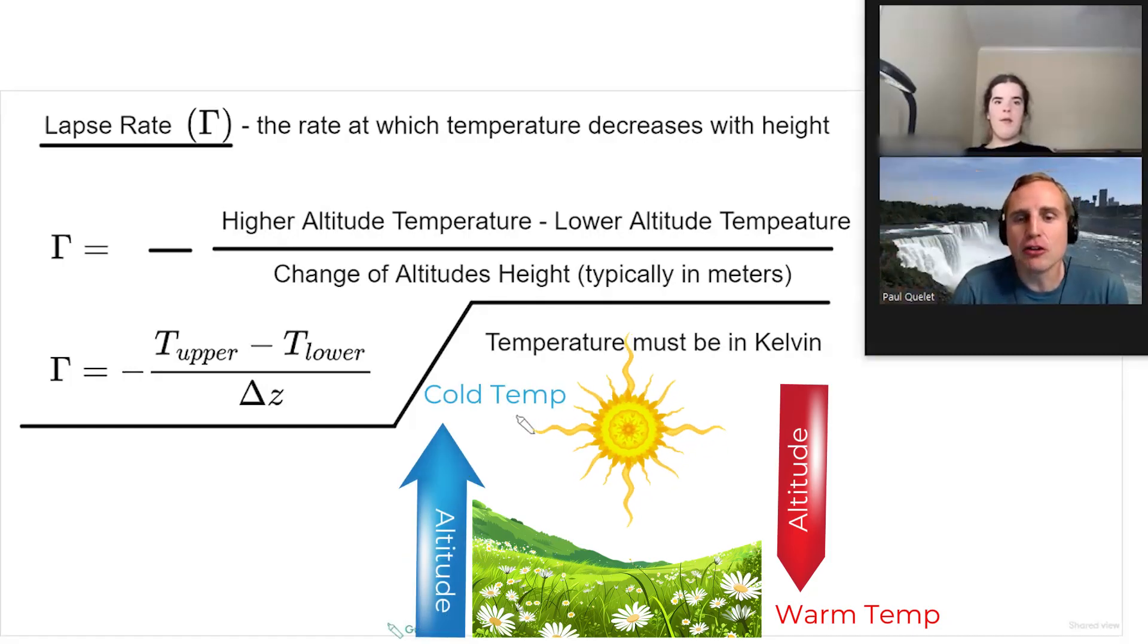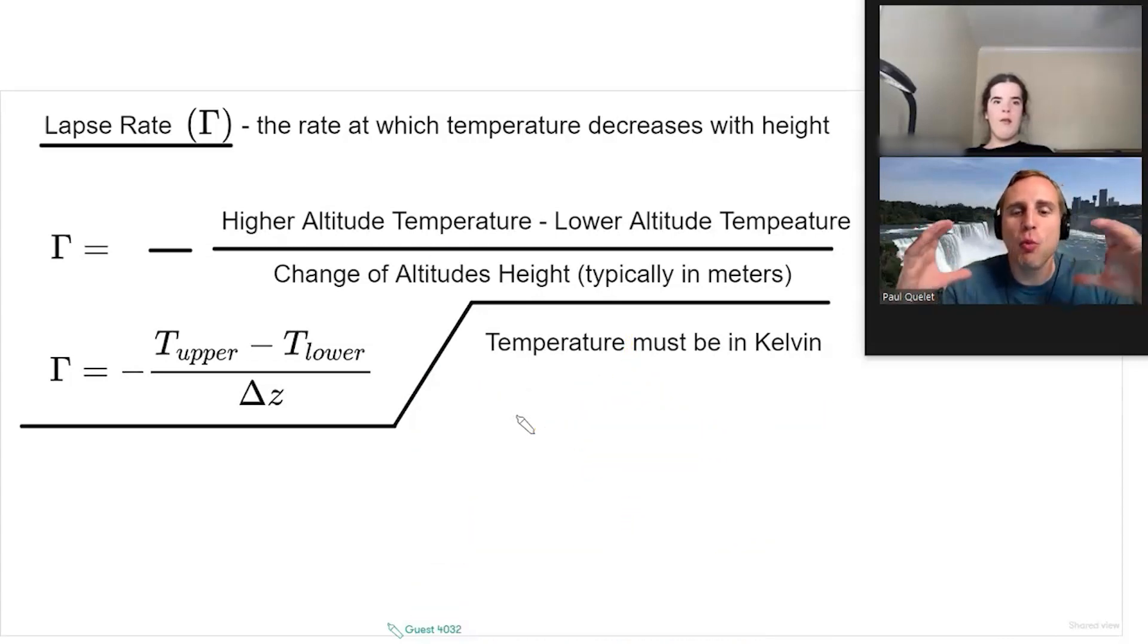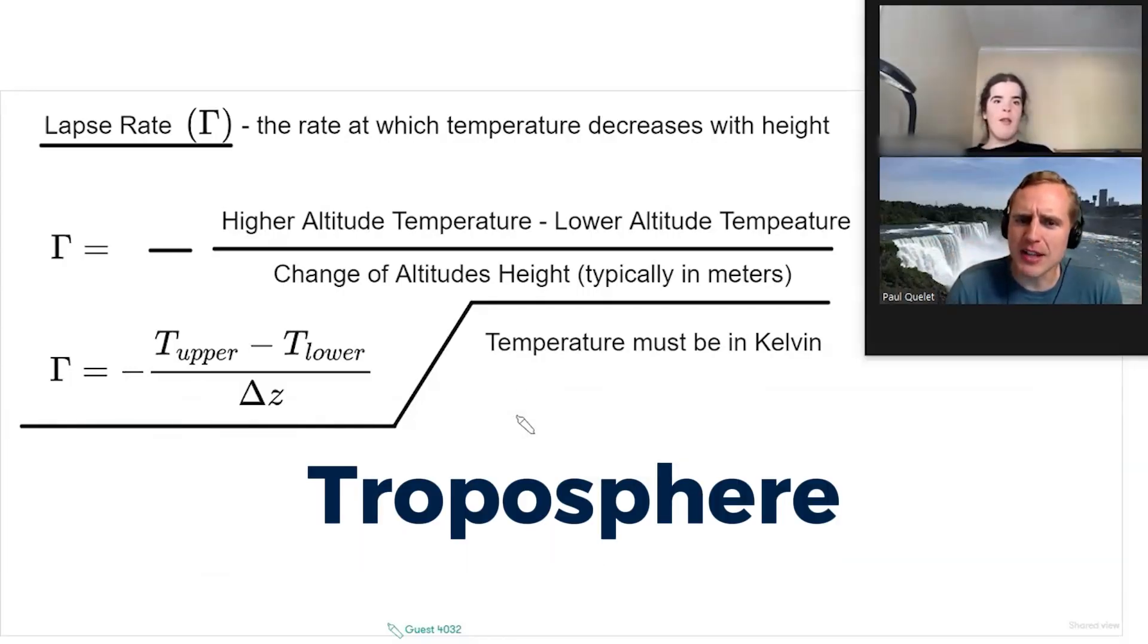So generally, lower altitudes are warmer, and higher altitudes are cooler in the weather layer, in the lower part of the atmosphere, where we live. Now, by the way, that actually has a name. It's called the troposphere. Does that sound familiar?